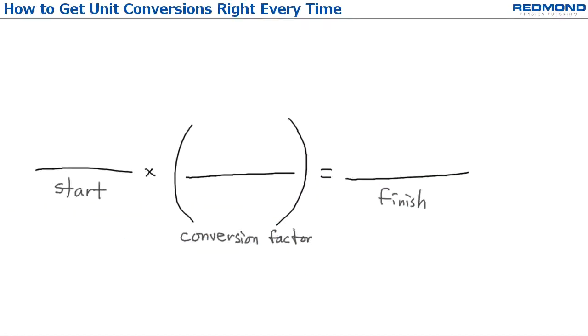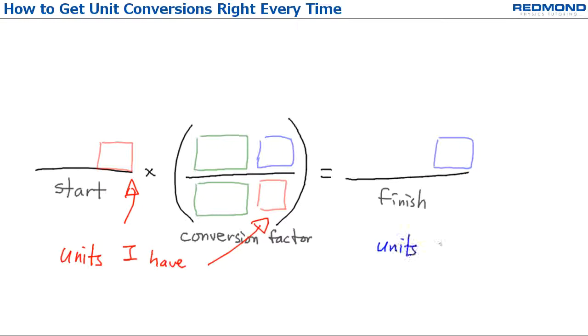I'll start with a single-step conversion. The amount I start with goes on the left, and what I get goes on the right. In the middle, I multiply by a conversion factor, with the top and bottom equal. These are in green. I divide by the units I have in red so they cancel out, and multiply by the units I want in blue so they show up on the right.